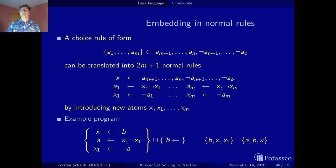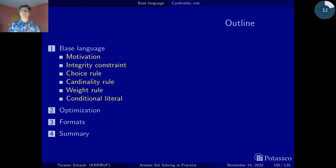This is the embedding of choice rules in normal rules by using auxiliary atoms. This will be the trick. We will use these new language constructs, translate them back into normal rules by using auxiliary atoms and the tricks from the exemplars we've seen before by using odd loops, even loops, and so on. This will be reoccurring. Now let's look at something more complicated, which are cardinality rules. Stay tuned!